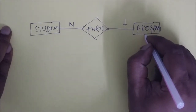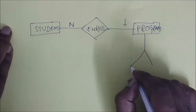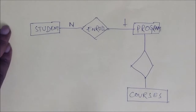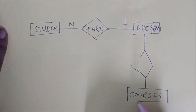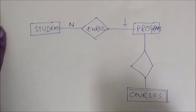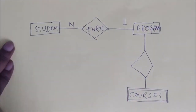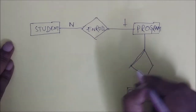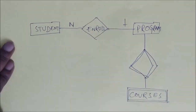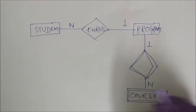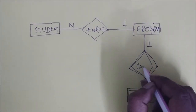One program can have some courses. These courses are not going to exist if the program does not exist, so this is a weak entity. A weak entity is kept in a double-lined rectangle. Similarly, this relationship is a weak relationship, represented by a double-lined diamond shape. One program can have n number of courses, so you can call this relationship 'content'.